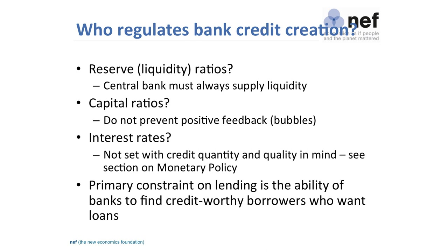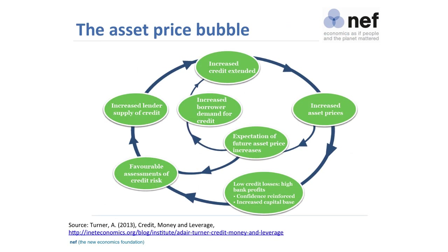This is the positive feedback loop, from Turner. House prices start to rise; everybody thinks they want to buy a house because prices will go up, so they ask for more mortgages. Banks say house prices are going up so they're happy to lend, offering more mortgages. The combination of those two things increases the house price. Everybody then thinks they really need to buy now, banks think they need to get into this market — and it's a positive feedback loop that ends in a bust, as all bubbles do.